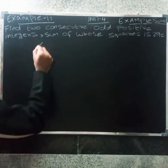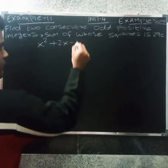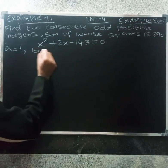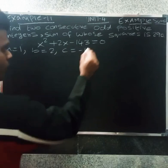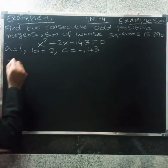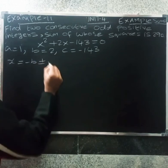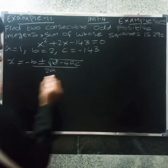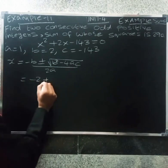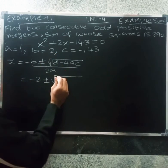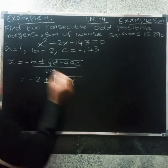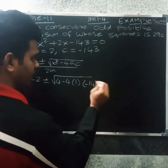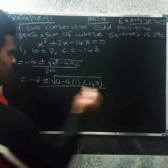Using the quadratic formula: x equals minus b plus or minus root of b square minus 4ac divided by 2a. So a equals 1, b equals minus 2, and b square is 4.